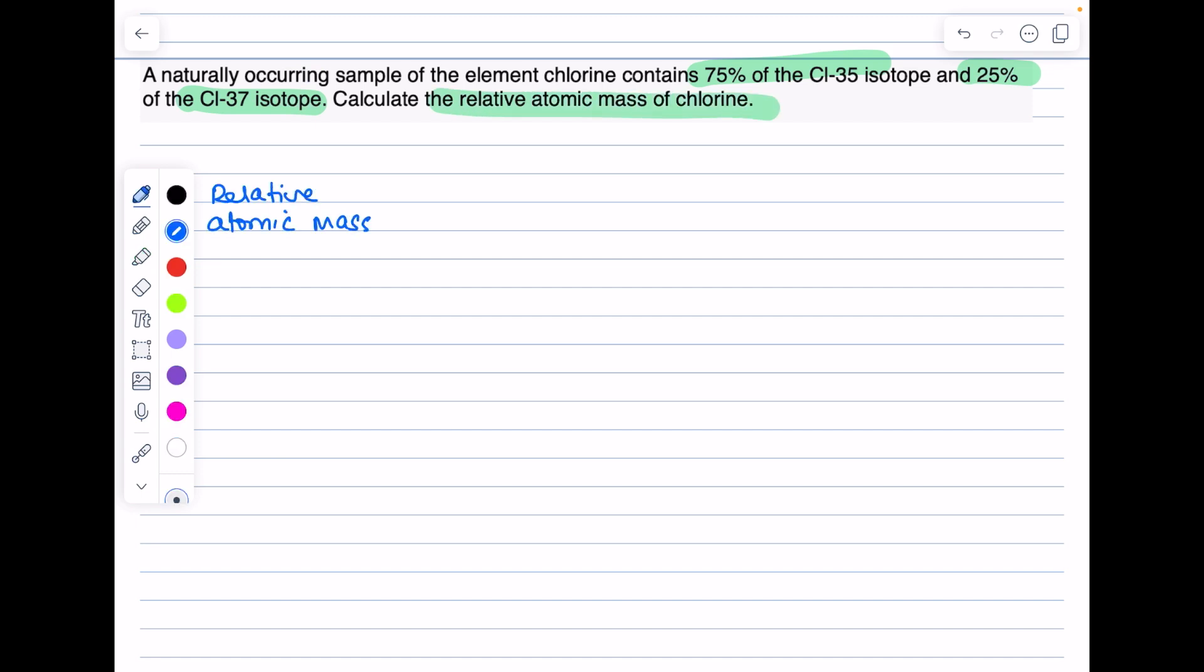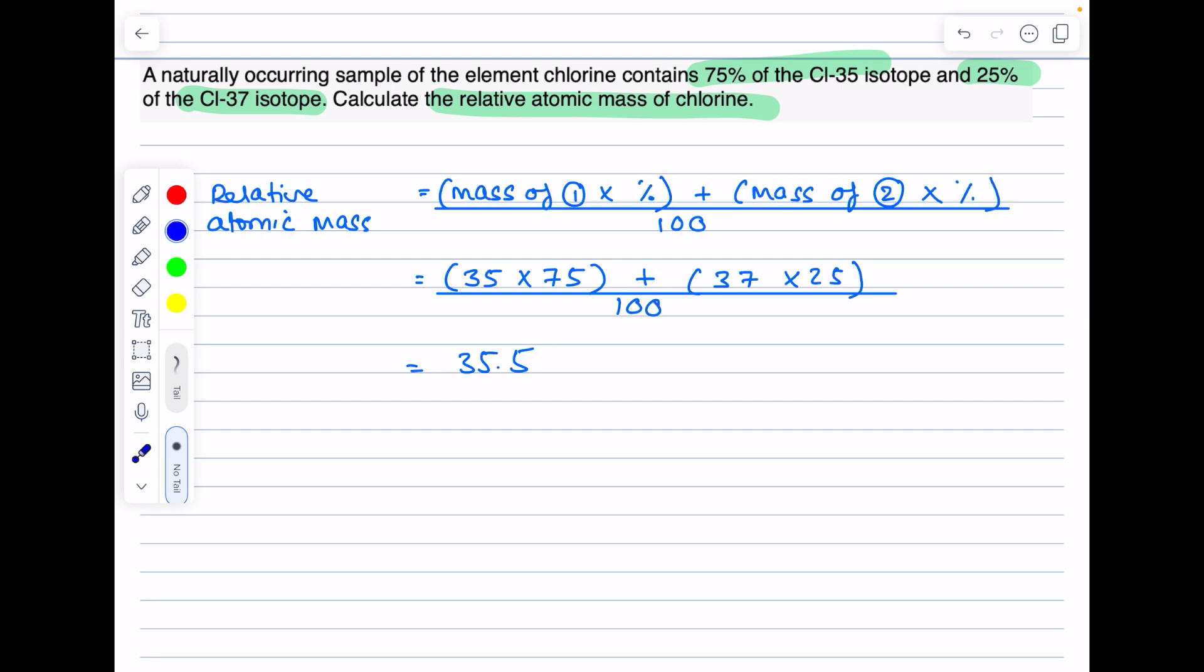So to find the relative atomic mass, you do the mass of the first isotope times its percentage, and then the mass of the second isotope times its percentage divided by 100. That's the case even if you have three or four isotopes. But here we only have two. So isotope one has a mass of 35, there's the percentage. Isotope two has a mass of 37 times its percentage. When you put that into your calculator, you get 35.5, which makes total sense because that mass number sits somewhere in between the two mass numbers of the isotopes.